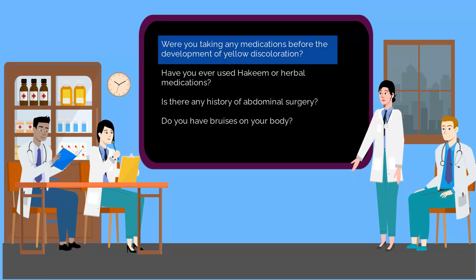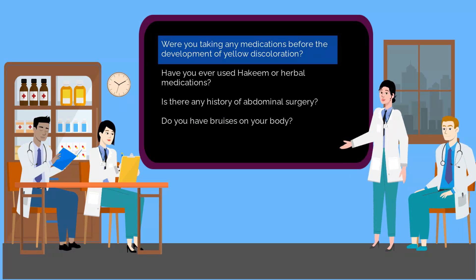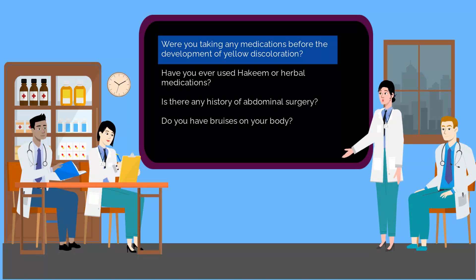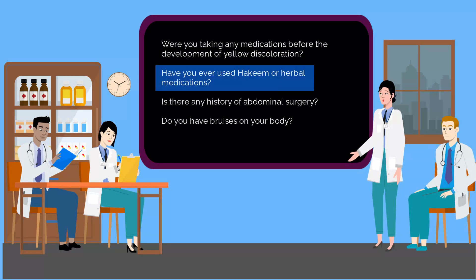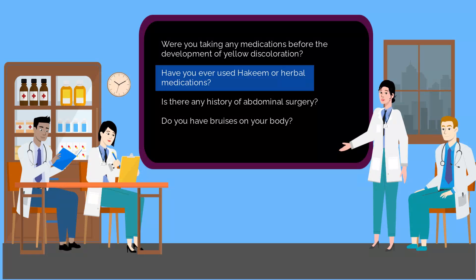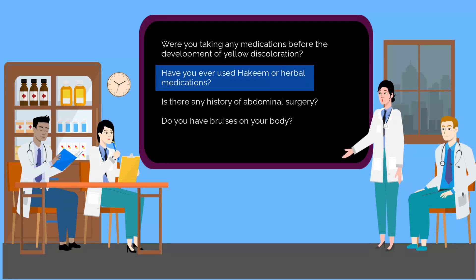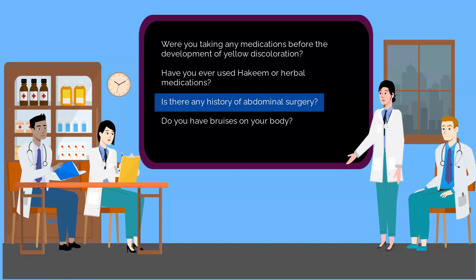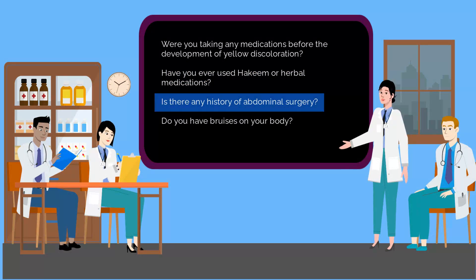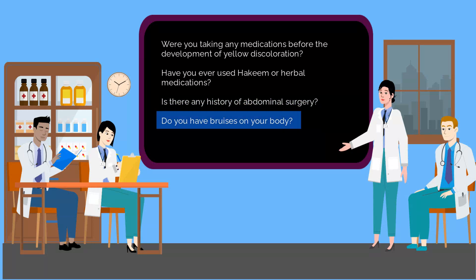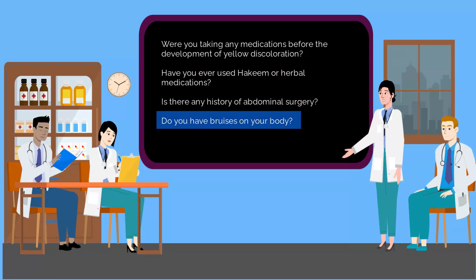Were you taking any medications before the development of yellow discoloration? Have you ever used Hakeem or herbal medications? Is there any history of abdominal surgery? Do you have bruises on your body?